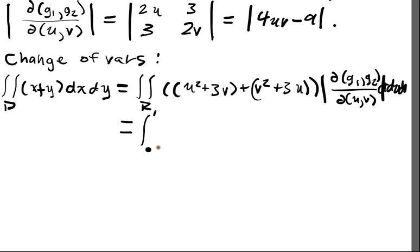Then we fully write it out. We'll have integral from 0 to 1. So, the region now becomes a rectangular region. We can just integrate from 0 to 1 in the uv plane. And, of course, we'll still have u squared plus 3v plus v squared plus 3u.